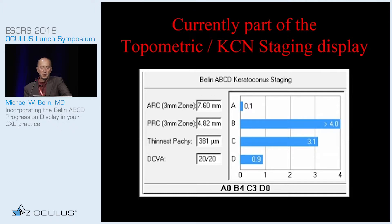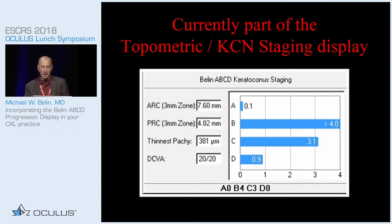This is currently available on the topometric keratoconus staging display. This is a blowup of the ABCD keratoconus staging. You'll see on the upper right a graphical display of each of the four parameters: A, anterior; B, back; C, corneal thickness; D, distance visual acuity. The classification is on the bottom, but the actual measurement — which is really what you should be looking at — is listed here.